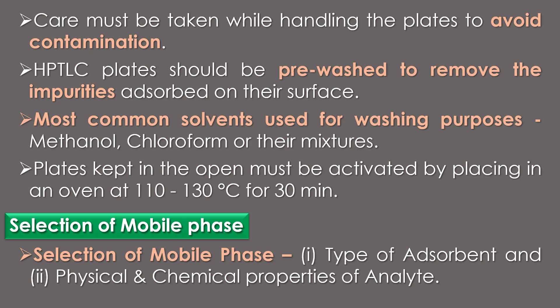The plates should be observed under UV light to check for any damage or presence of impurities on the absorbent. HPTLC plates should be pre-washed to remove absorbed impurities from the surface. Pre-washing is required to study the reproducibility of results and for quantification purposes. The washing may be done by ascending, dipping, or continuous method, using solvents such as methanol, chloroform, or their mixtures. The plate must be activated by placing it in an oven at 110 to 130 degrees Celsius for 30 minutes.